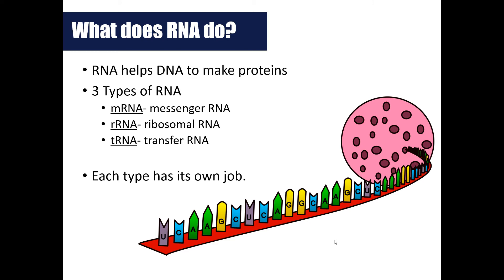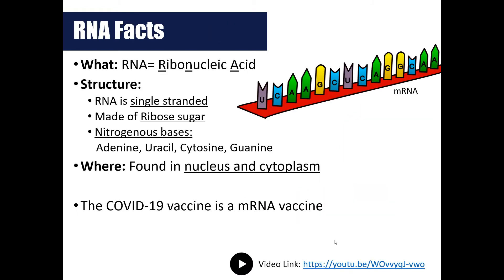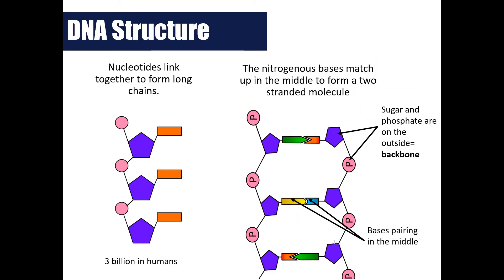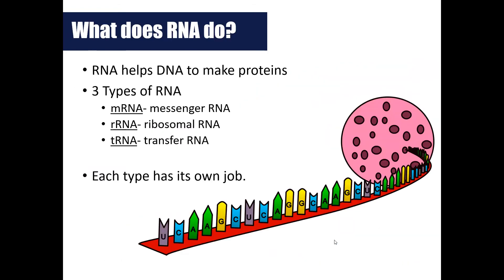There are three types of RNA we're going to talk about throughout the rest of the unit. mRNA stands for messenger RNA, rRNA stands for ribosomal RNA, and tRNA is transfer RNA. We're going to come back in a future lesson on protein synthesis and revisit these three types of RNA. Each type of RNA has its own job.